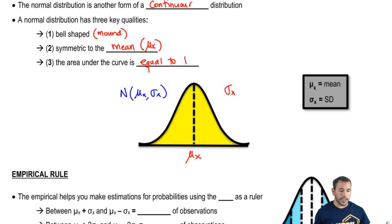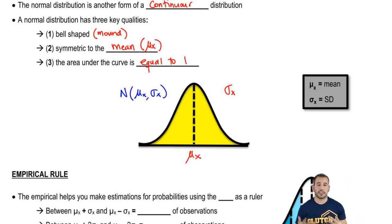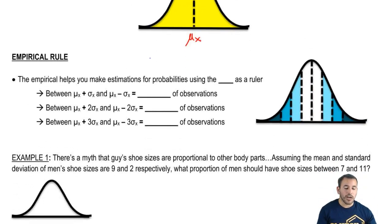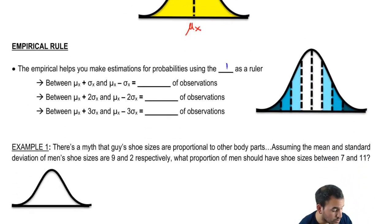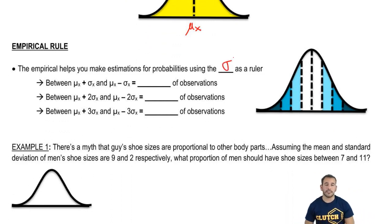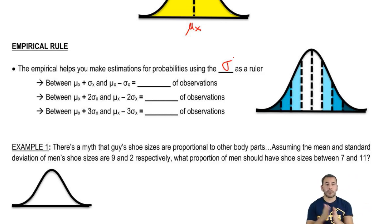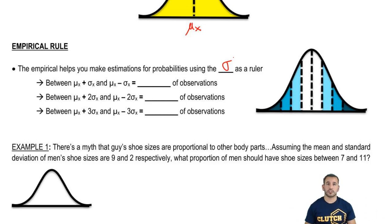The empirical rule helps make estimations for probabilities using the standard deviation as a ruler. This may sound familiar because we just talked about Chebyshev's rule, which also uses standard deviation to make estimations. But the empirical rule is specifically associated with normal distributions, whereas Chebyshev's rule applies to distributions of any shape without assumptions about the shape.